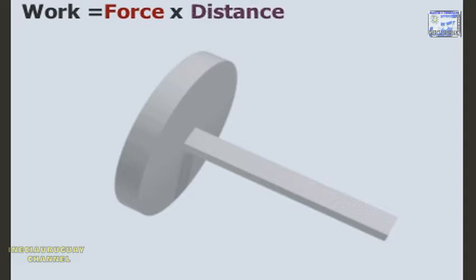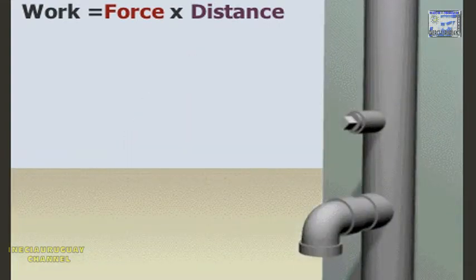A wheel and axle makes things easier by changing the distance you have to turn something. This also changes the amount of force you have to use. In this simple example of a water main, we will ignore the effects of friction.